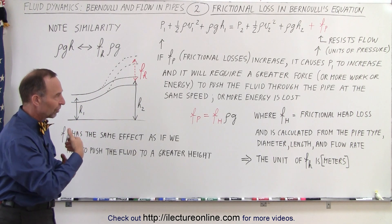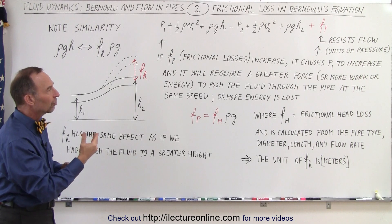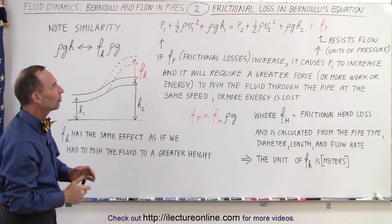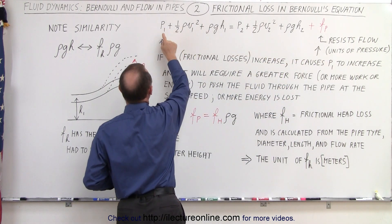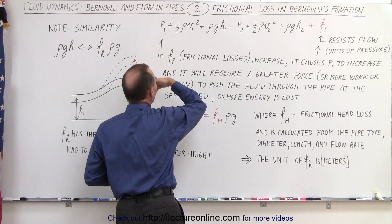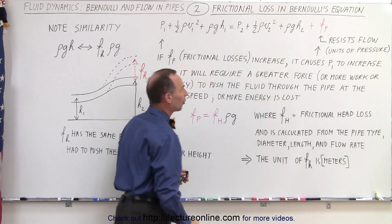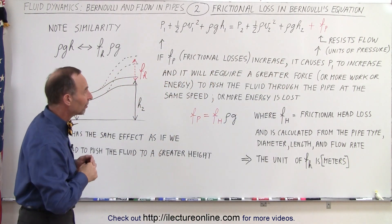If the frictional losses increase, it causes P1 to increase on the other side. For example, if we have more resistance to the flow, P1 will have to increase to get the fluid to flow through the pipe at the same velocity.